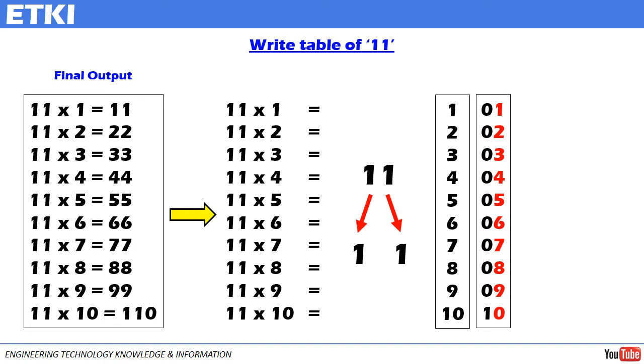Now, let us write the answer of table 11. Here you can see, I have picked the numbers highlighted in red color and written as it is. 1, 2, 3, 4, 5, 6, 7, 8, 9, 0. So, these numbers are taken from the table of number 1 on the right hand side. And if you notice, these numbers are all in the unit place. So, we have picked up numbers only from the unit place.